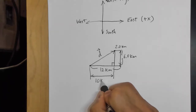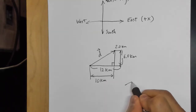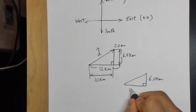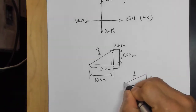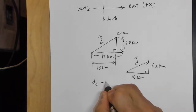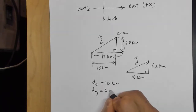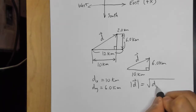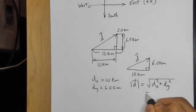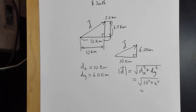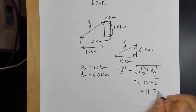So d_x = 10 km and d_y = 6 km. The magnitude of d is √(d_x² + d_y²) = √(10² + 6²) = √136, which is approximately 11.7 kilometers.